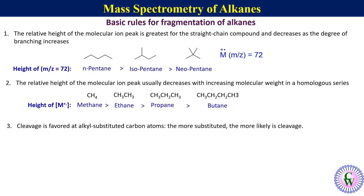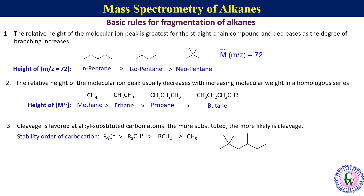Rule number three: cleavage is favored at alkyl-substituted carbon atoms — the more substituted, the more likely the cleavage. This is a consequence of the increased stability of tertiary carbocations over secondary, which in turn are more stable than primary, with the methyl cation being the least stable. For example, in a given alkane, the substituent counts on different carbon atoms are 1, 1, 1, 4, 2, 3, 2, 1, and 1, so based on rule three, cleavage will most likely occur at the carbon having four substituents.